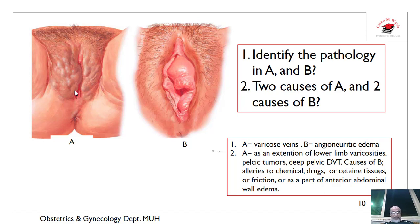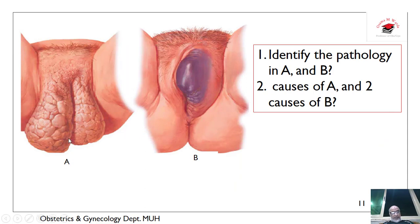The labial edema here may be allergic to chemicals, drugs, or certain tissues, or due to friction, or as part of anterior abdominal wall edema. This is vulvar varicosities and this is angioneurotic edema of the labia. This is elephantiasis, which is caused by filariasis — infestation with filaria worms of the lymphatics — in certain endemic areas such as El-Manzala and Damietta. And this is vulvar hematoma due to trauma or ruptured veins or ruptured varicosity.